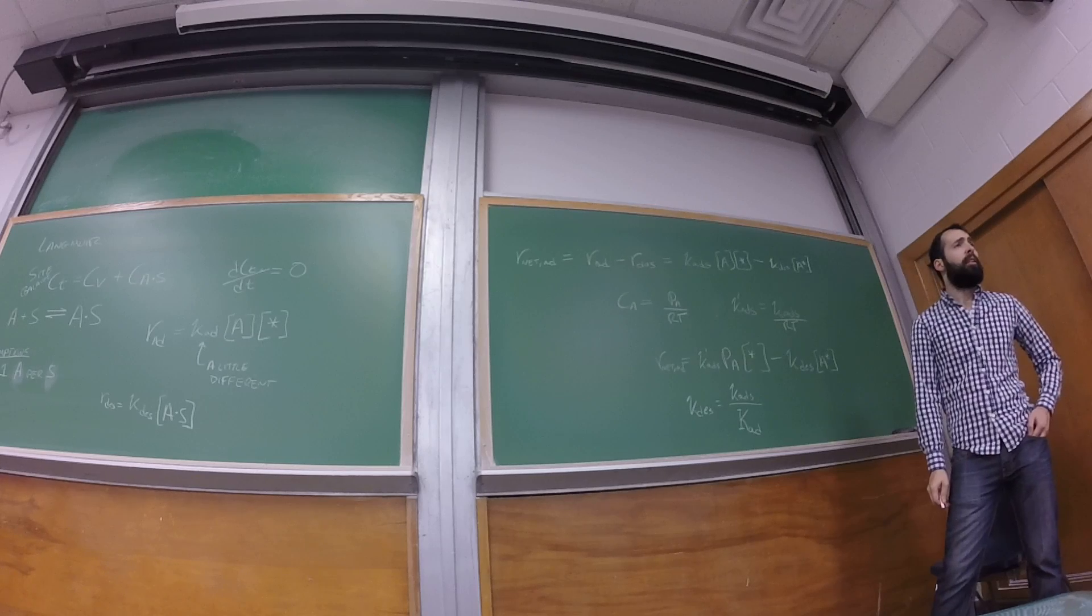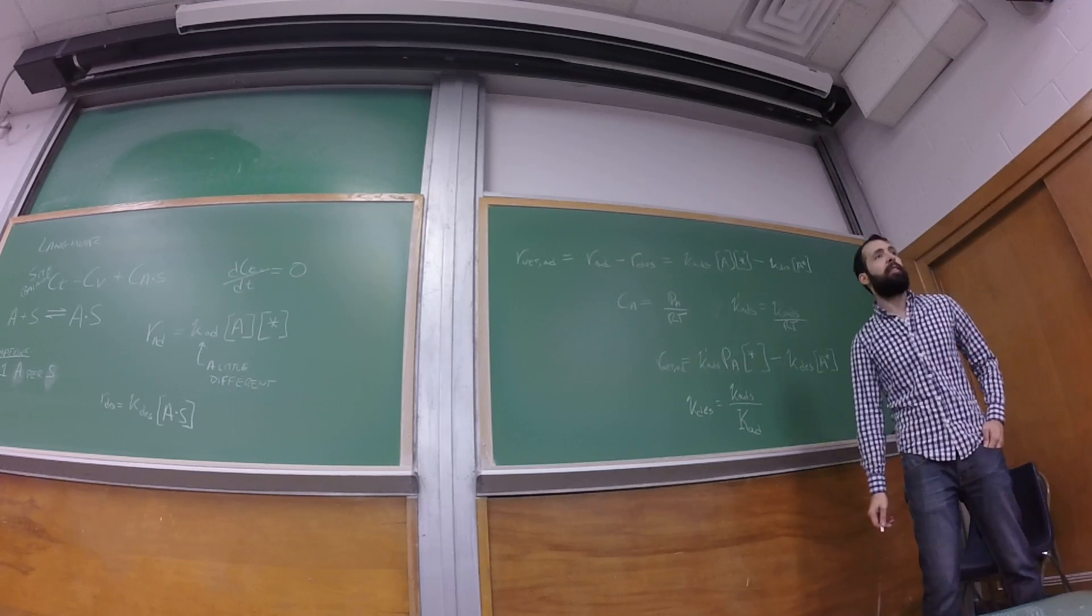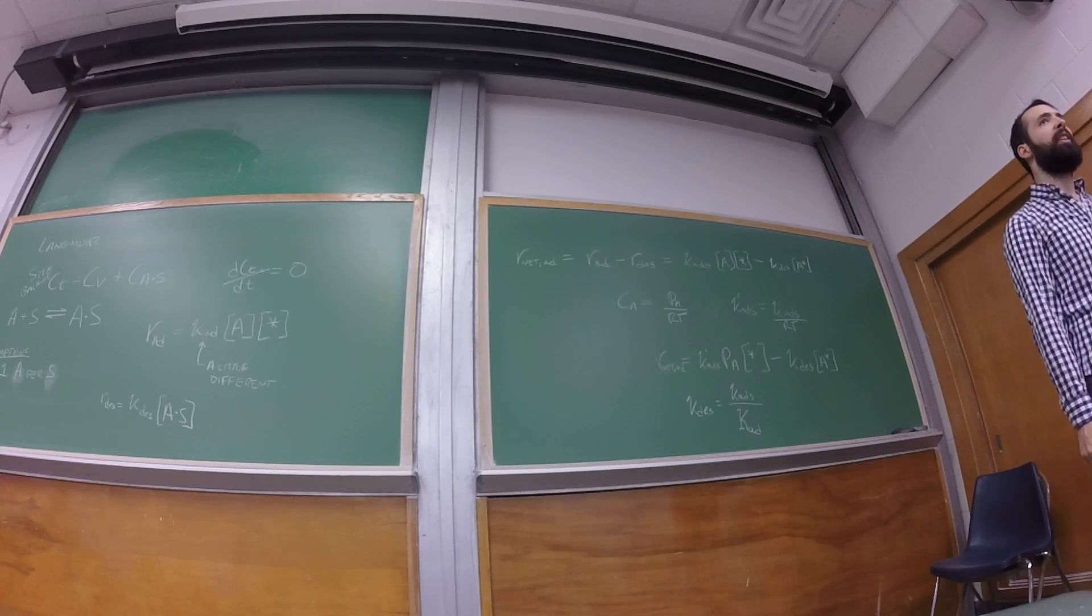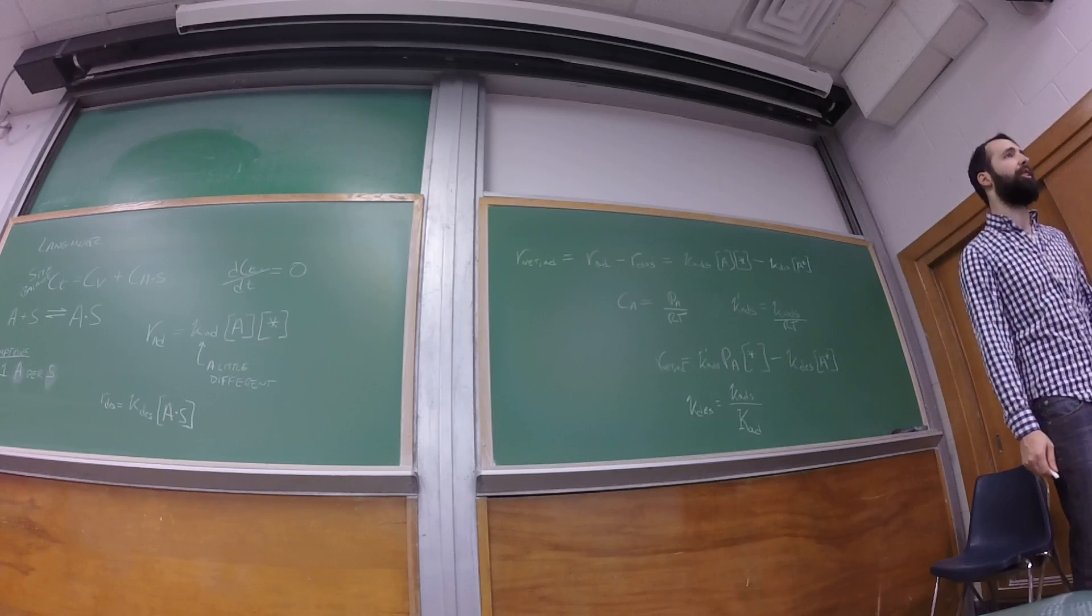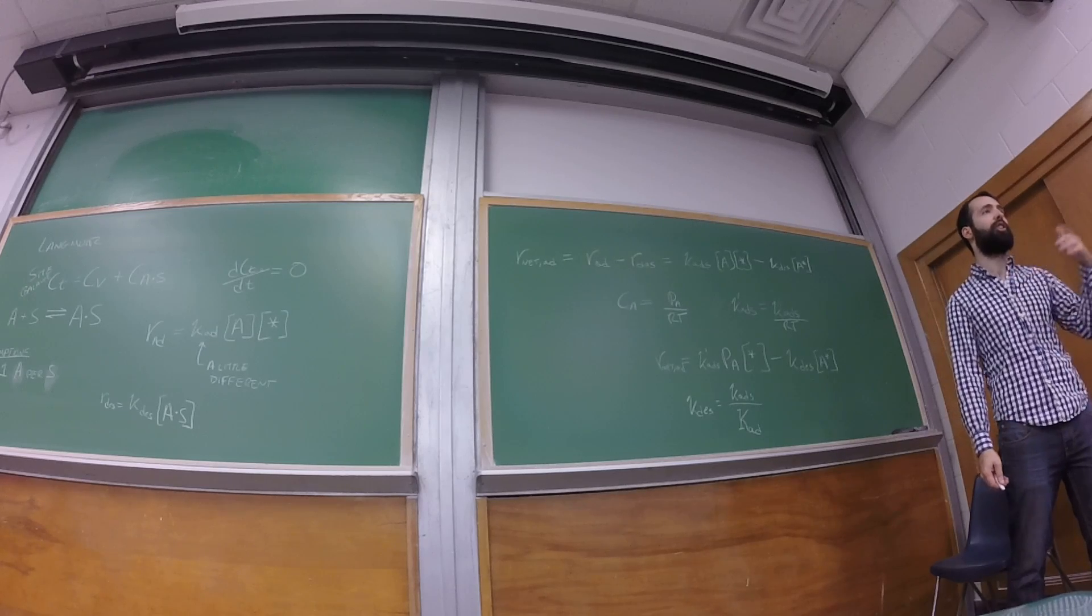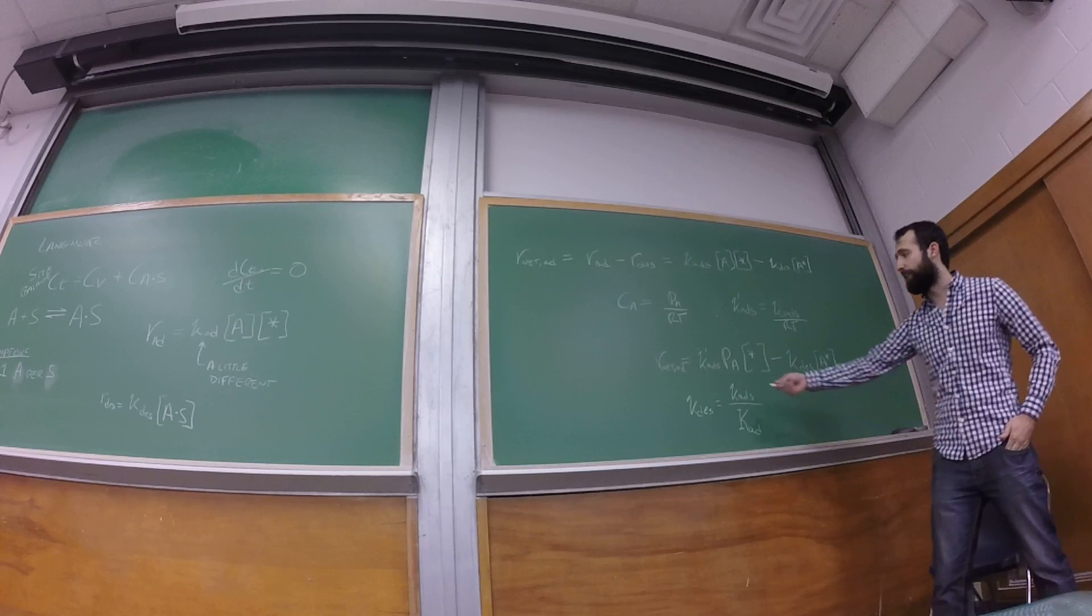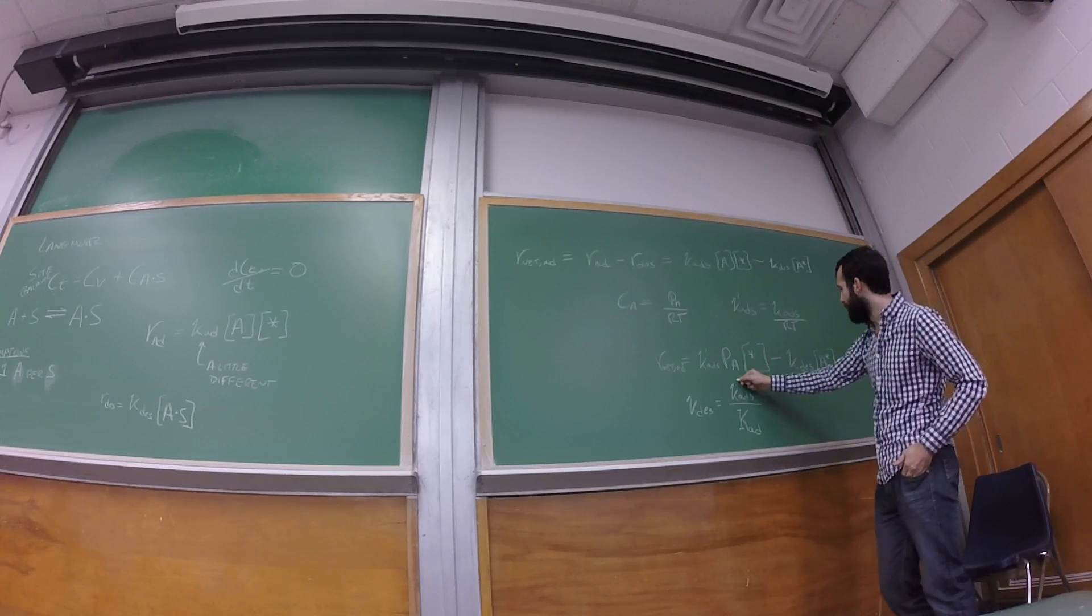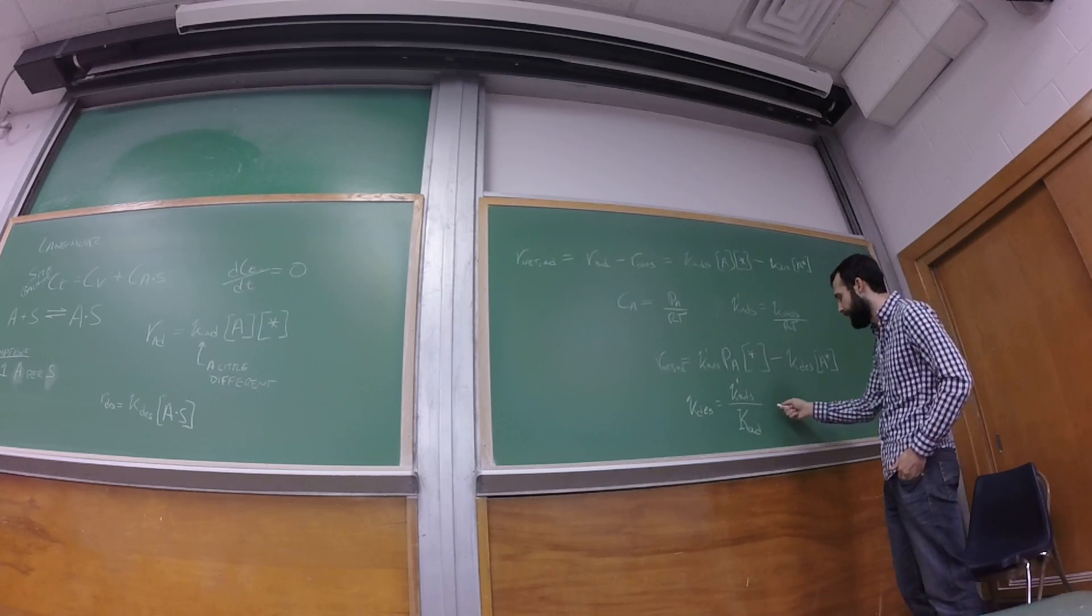Do you do that because it's easier to measure equilibrium constants? Yes, that's usually why, and I think in the book in general, he often does this for a reversible reaction. Instead of showing the reverse rate constant, he'll just show one over the equilibrium constant. Because he likes to factor out k adsorbs. We'll do it with the prime so that we can factor it out cleanly as well.